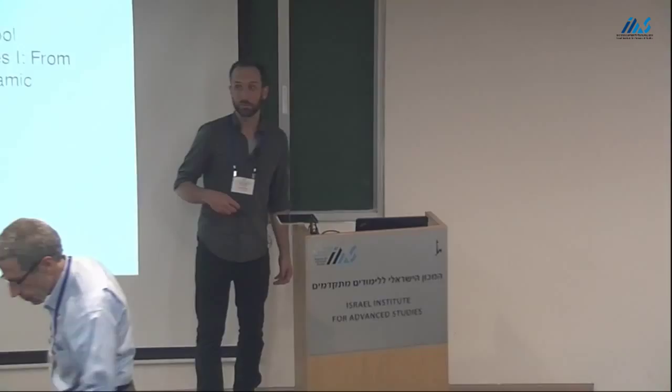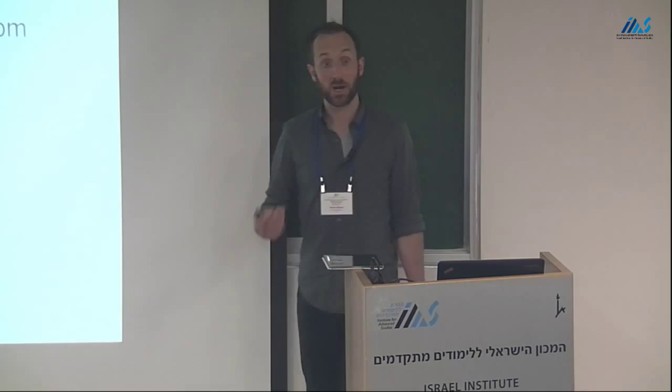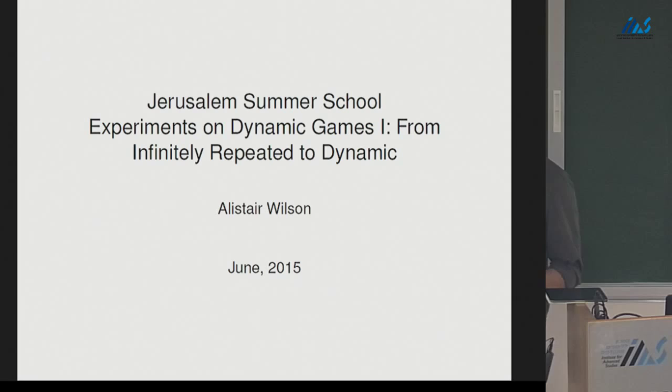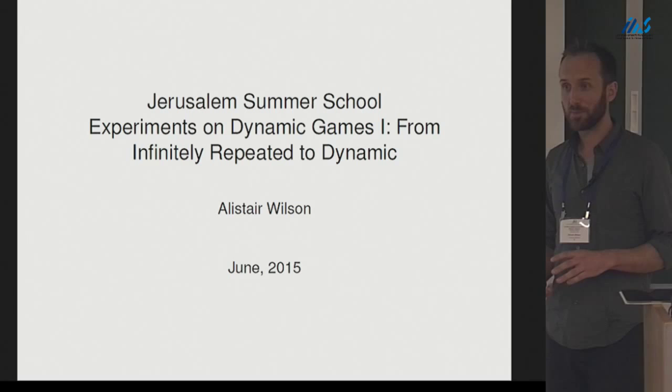Hello. First off, before I start, I'd like to say a very large thank you to both Eric and Drew for inviting me here. I'm going to talk to you about experiments on stochastic games. I'm going to try and move somewhat from what Guillaume was talking on infinitely repeated games to look at games with an evolving state variable. There's probably going to be a random distribution of typos through these slides. I haven't misspelt my own name, so I'm successful at the moment.